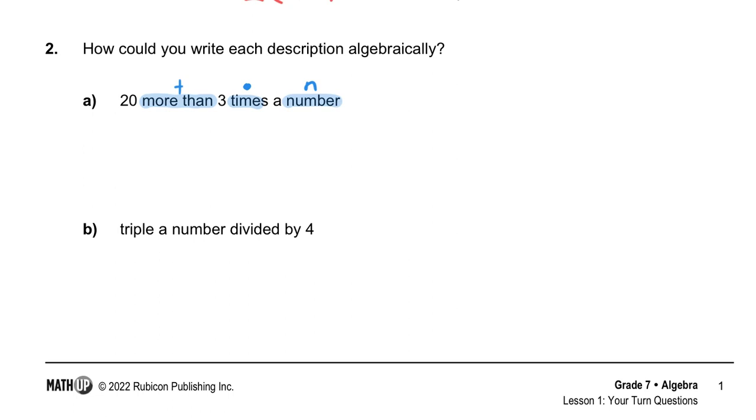Okay, so the first thing. 20 more than 3 times a number. Let's start with that. 3 times a number, right? Because we're switching it around. And we have 20 more than 3 times a number. The other way we could do it is we could say 20 take away 3n. Because this is another way of saying, what do we need to add to 3n to get to 20?